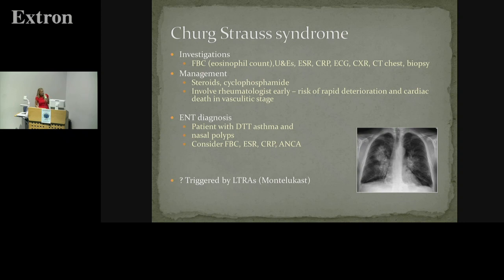The eosinophil count is key, and it's worth measuring in almost all polyp patients because it's a good prognostic indicator as well. A patient with high levels of eosinophils, even if they don't meet criteria for eGPA, will have a poorer outcome than those with low eosinophil counts. It will also help direct patients to biologic therapies as they become more available. These patients are predominantly managed in a difficult-to-treat asthma and vasculitic clinic. I would avoid operating on their sinuses if at all possible because you stimulate very intense osteitis and their sinuses scar down and obliterate very quickly.